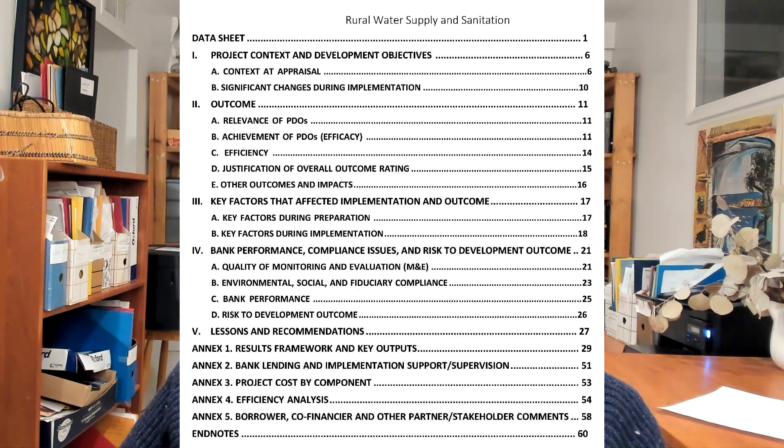And 2C is called efficiency. This has two parts. One is economic efficiency — what was the economic rate of return? Not financial, but the economic rate of return. Was it good enough? And the second part is implementation efficiency — was the project implemented in time? Was the project implemented within the budget that was allocated for it? And if there were cost savings, that's a plus.